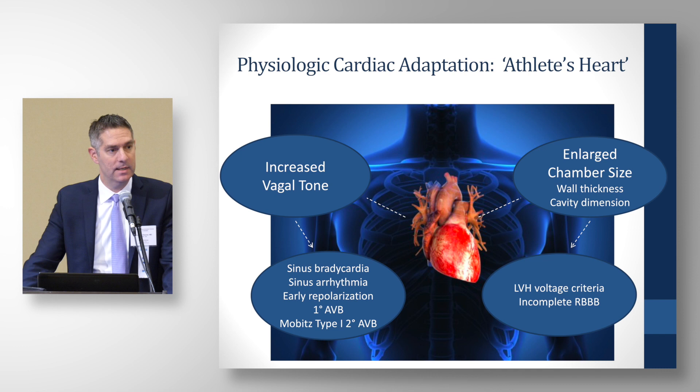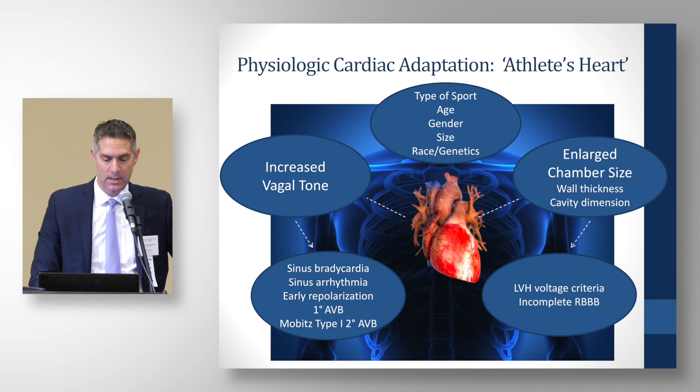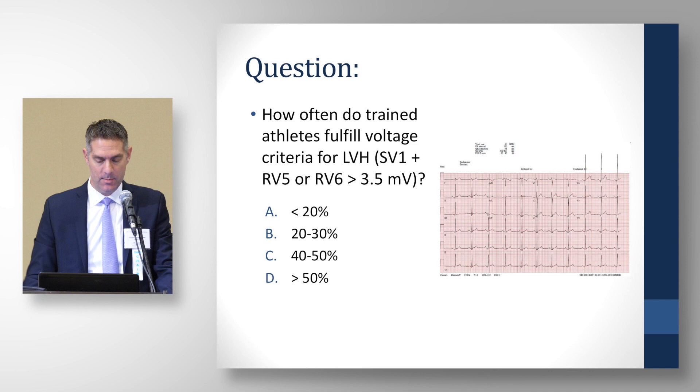Increased chamber size leads to left ventricular hypertrophy voltage criteria and incomplete right bundle branch block. Other things also influence these physiologic cardiac adaptations. The question is: how often do trained athletes fulfill voltage criteria for LVH using so-called offline standards?